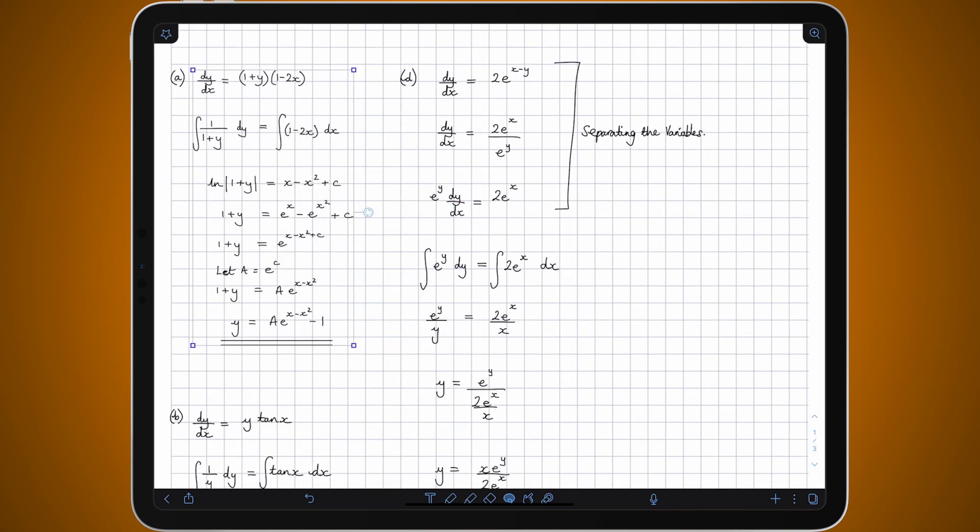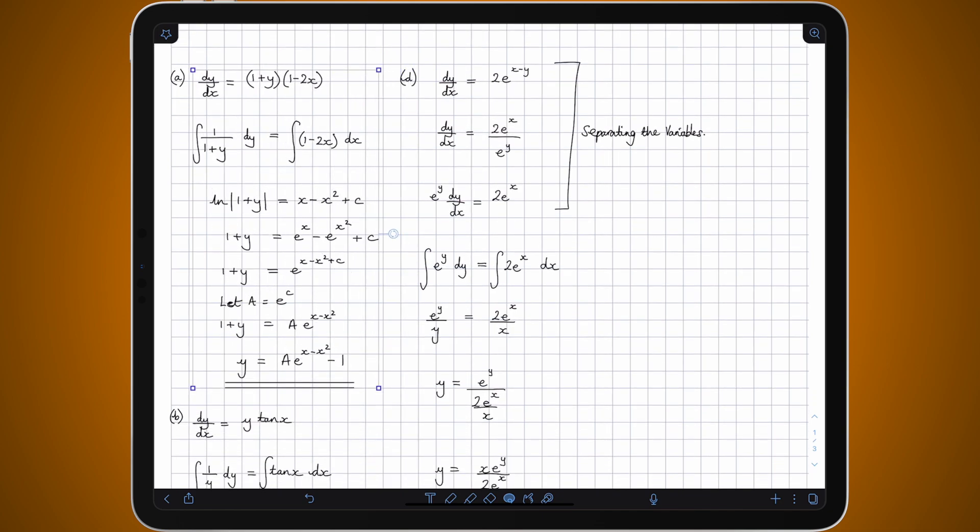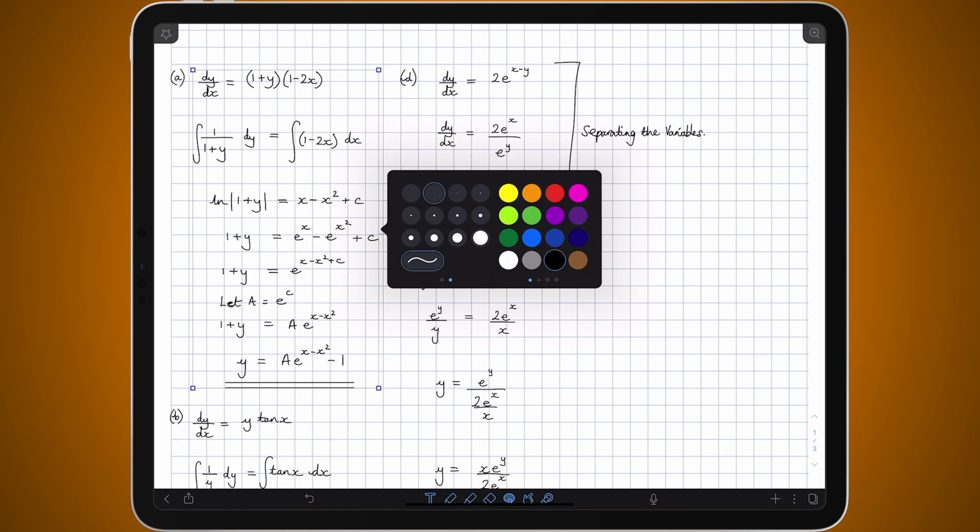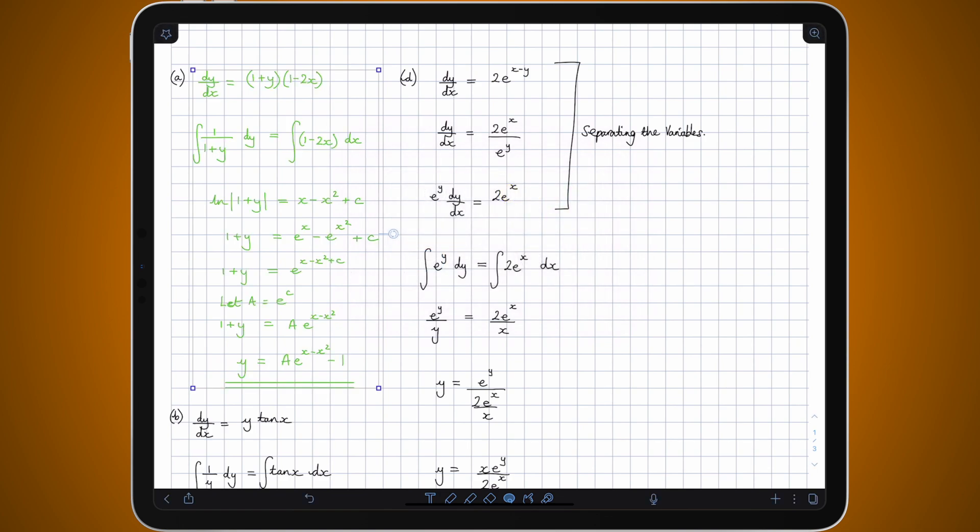This now allows me to resize it all as one object and the great thing about this is it means I can now apply styles to the whole lot all at once. So I can change the color to say green if I want to, and if I click off of this now and tap back onto it you'll see this group has been retained.